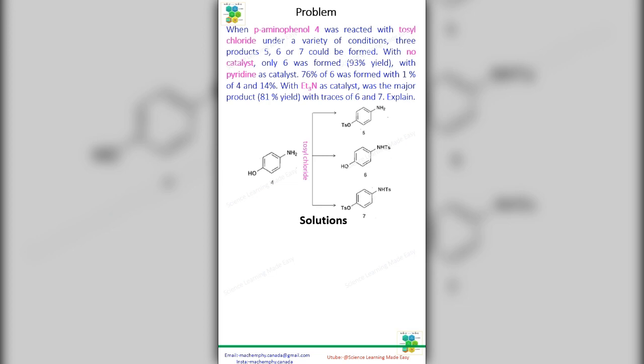with 1% of 4 and 14% of 7. With ET3N as catalyst, 5 was the major product, 81% yield, with traces of 6 and 7. Explain.